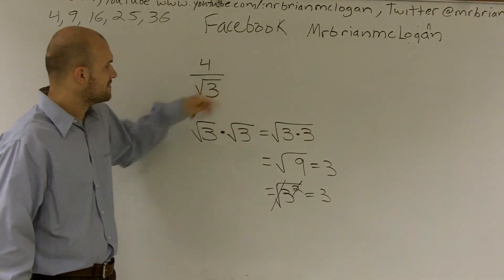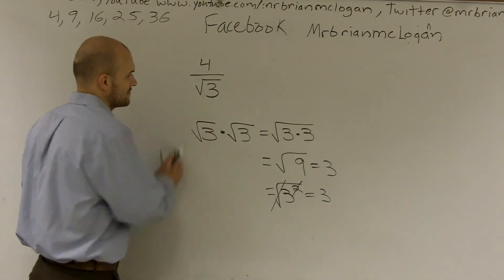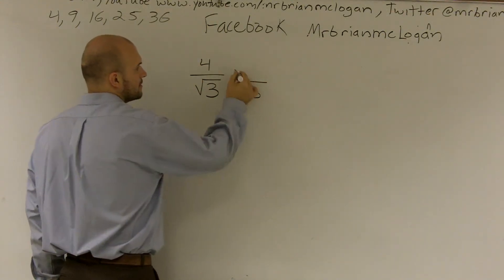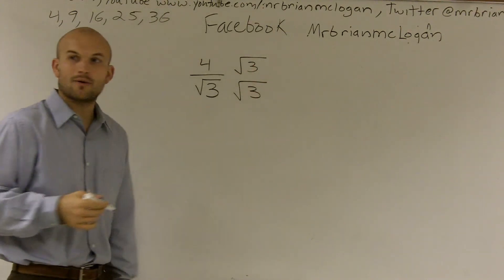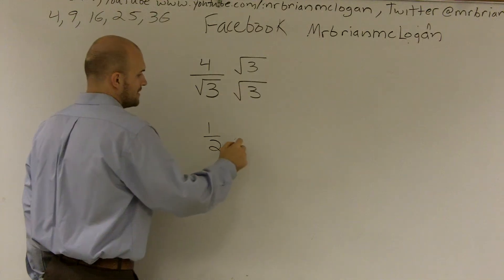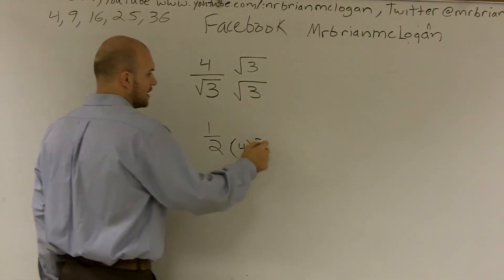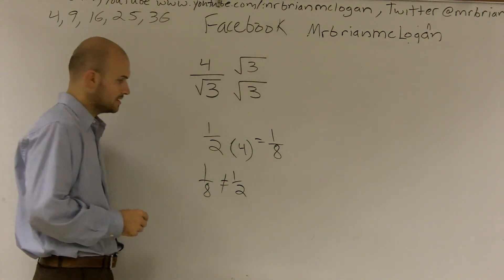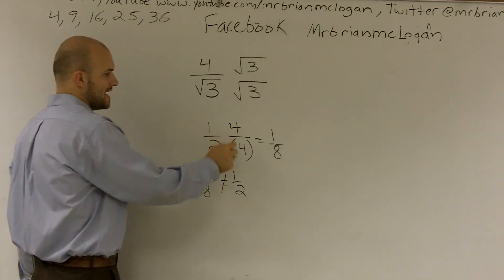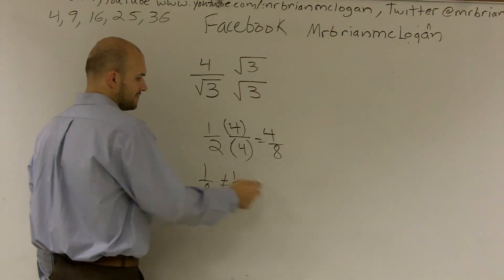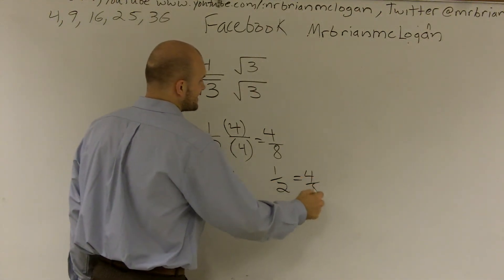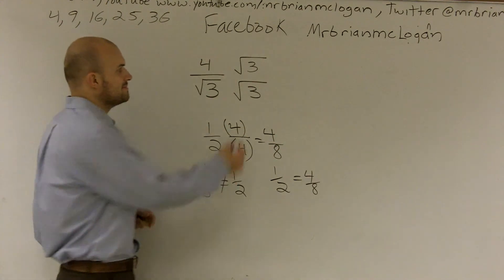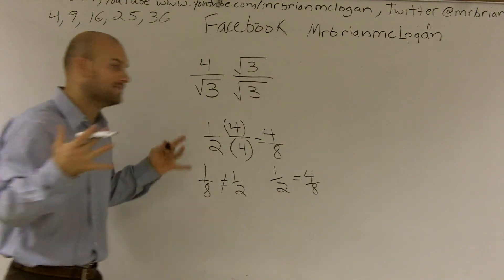So if I multiply the denominator by square root of 3, I'll get 3. That's what I'm going to do — multiply by square root of 3 on the top and the bottom. Why both? Well, if I multiplied 1 half times 4 on only the bottom, I'd get 1 eighth, which does not equal 1 half. So to keep the fraction true, I have to multiply both top and bottom — keeping my fraction intact.